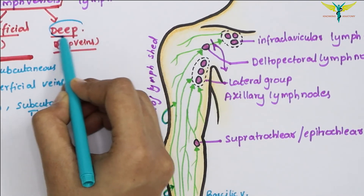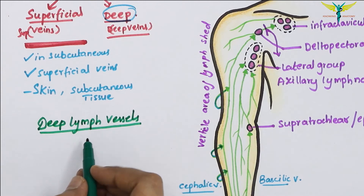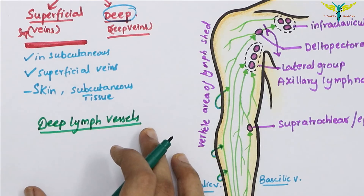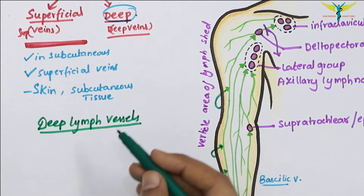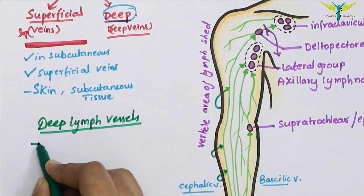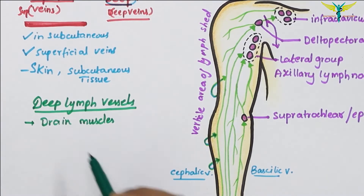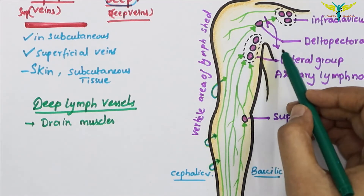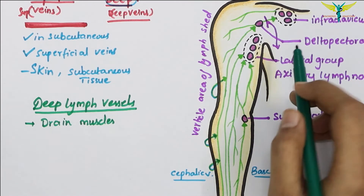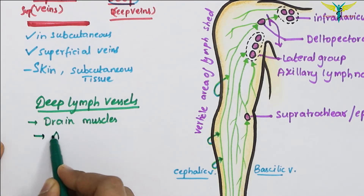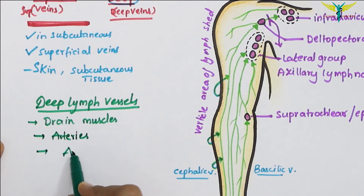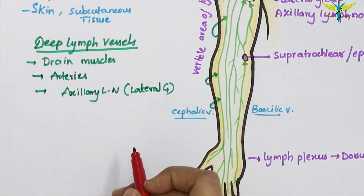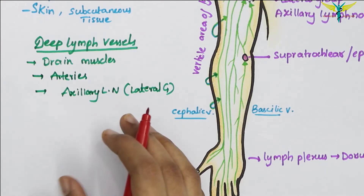The deep lymph vessels are much less numerous than the superficial lymph vessels. They drain structures deep to the deep fascia, such as the muscles. The deep lymph vessels course along the arteries and drain into the lateral group of the axillary lymph nodes.